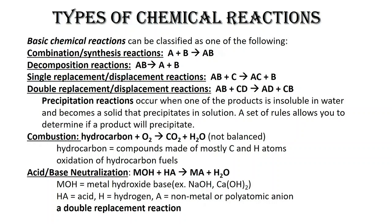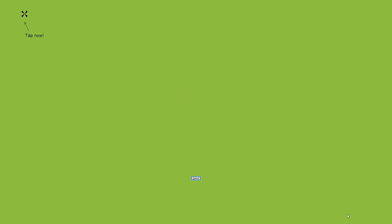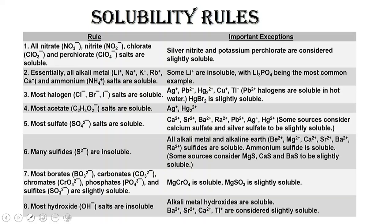A metal hydroxide is going to be a base, and our acids are hydrogen plus some type of nonmetal or polyatomic ion. Let's take a look at the rules for determining precipitation reactions. On the left we have the rule with different types of ions and their exceptions. For example, all nitrates are soluble except silver nitrate, which is slightly soluble. We're going to use these solubility rules for a couple of examples.